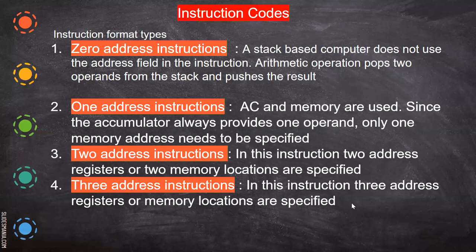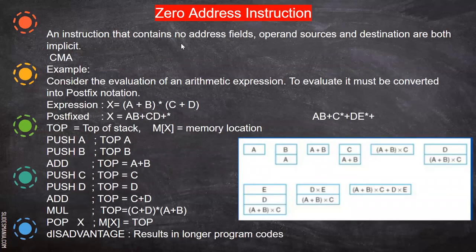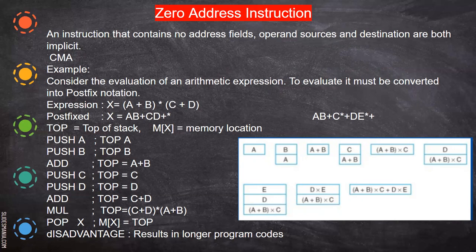A zero address instruction contains no address fields — both operand sources and destinations are implicit. For example, CMA means 'complement accumulator.' Here no address is given, only the opcode. CMA complements whatever value is present in the accumulator: if a bit is zero it becomes one, and if it is one it becomes zero. So all eight bits of the accumulator are complemented when this instruction is given.